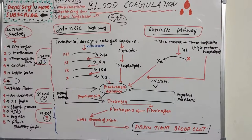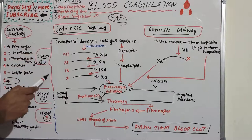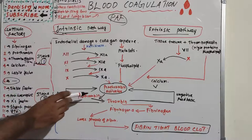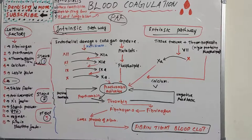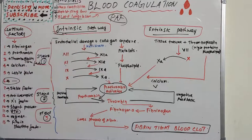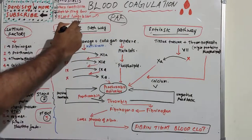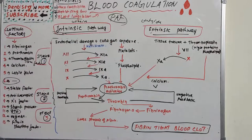Stage one is the formation of prothrombin activator. Blood clotting commences with the formation of a substance called prothrombin activator, which converts prothrombin to thrombin. Its formation is initiated by substances either within the blood or outside the blood. The formation of prothrombin activator occurs through two pathways: intrinsic pathway — within the blood — and extrinsic pathway — outside the blood.